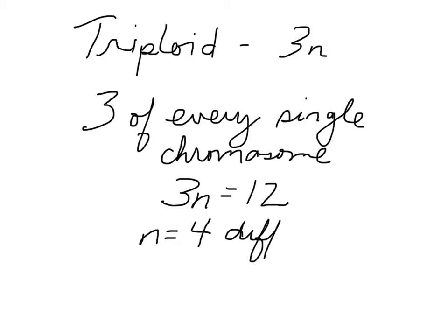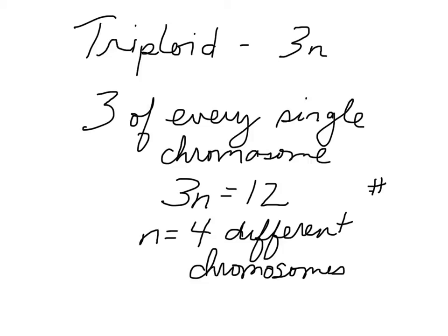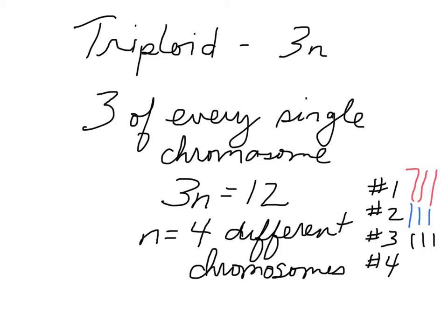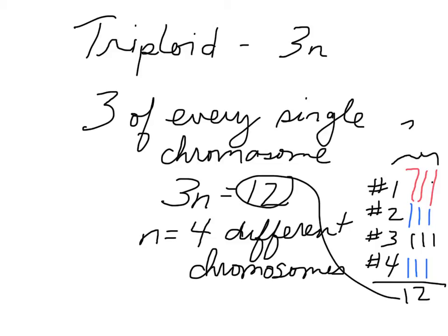Those are 4 different chromosomes. So that means you have chromosome number 1, chromosome number 2, chromosome number 3, and chromosome number 4. If I use red as my little chromosome that I draw, you have 3 of each of those: 3 of number 1, 3 of number 2, 3 of number 3, and 3 of number 4. If you add those together — 3 plus 3 plus 3 plus 3 — you get 12 total chromosomes. And you are triploid, meaning you have 3 of each.